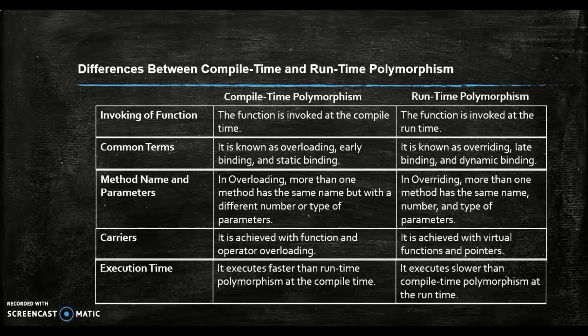Regarding execution time: compile time polymorphism executes faster than runtime polymorphism at compile time. Runtime polymorphism executes slower than compile time polymorphism at runtime.